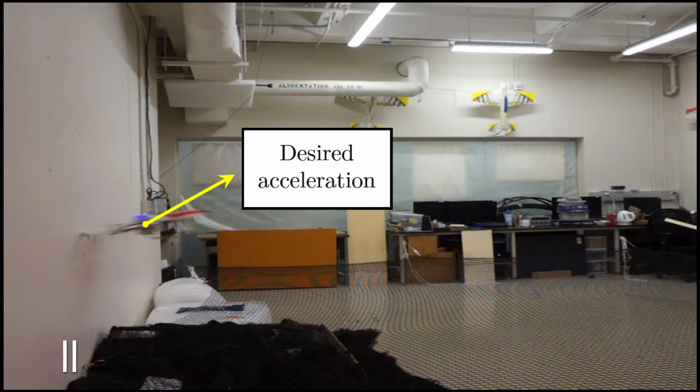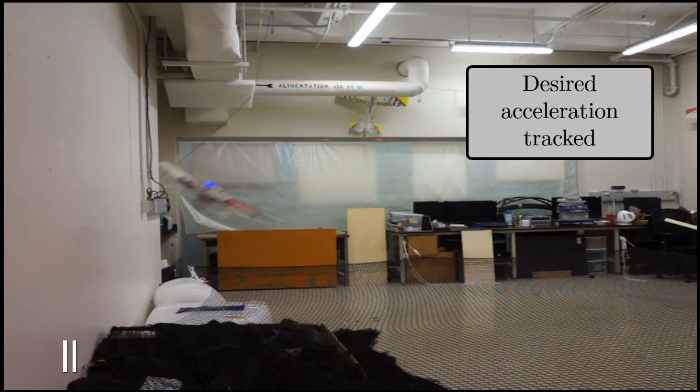This intensity value is used to generate a desired acceleration pointing away from the wall. An aggressive attitude control law tracks the desired acceleration vector.